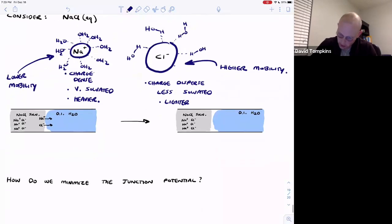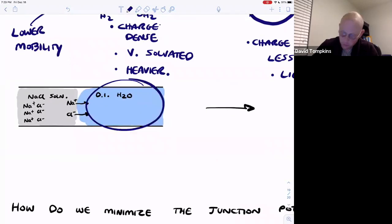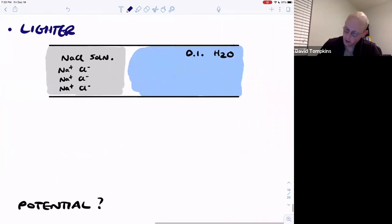So if you were to place a sodium chloride solution into pure deionized water, then the chloride and sodium in the solution are going to move from regions of high concentration to low concentration. And as sodium travels, it's traveling slower than the chloride.